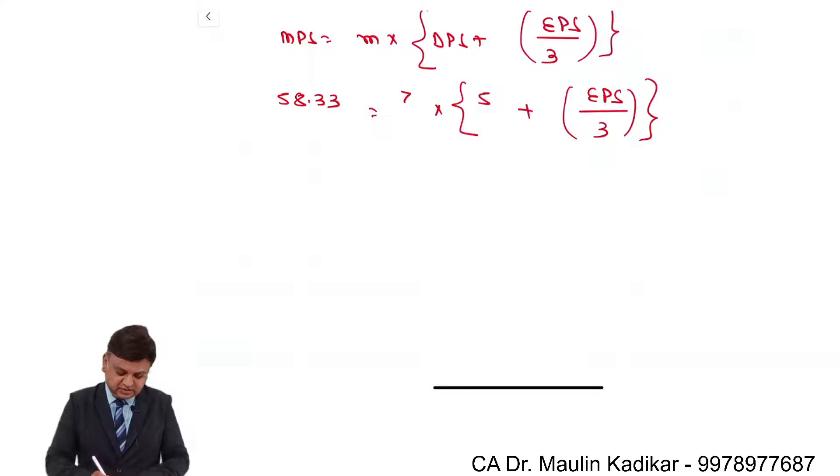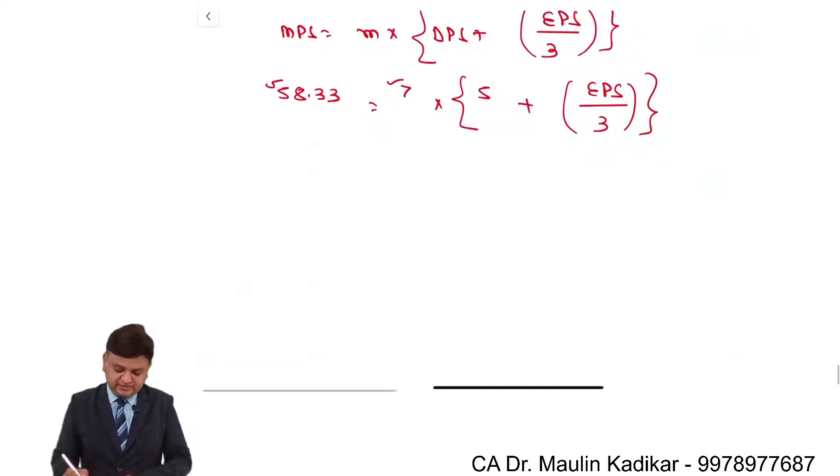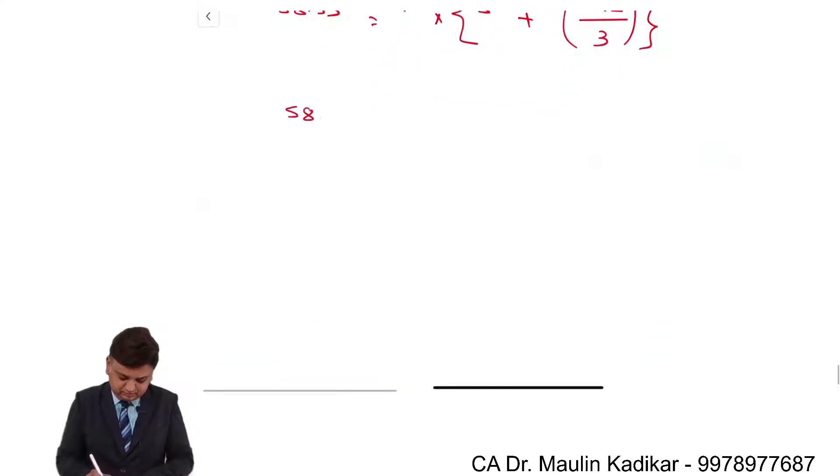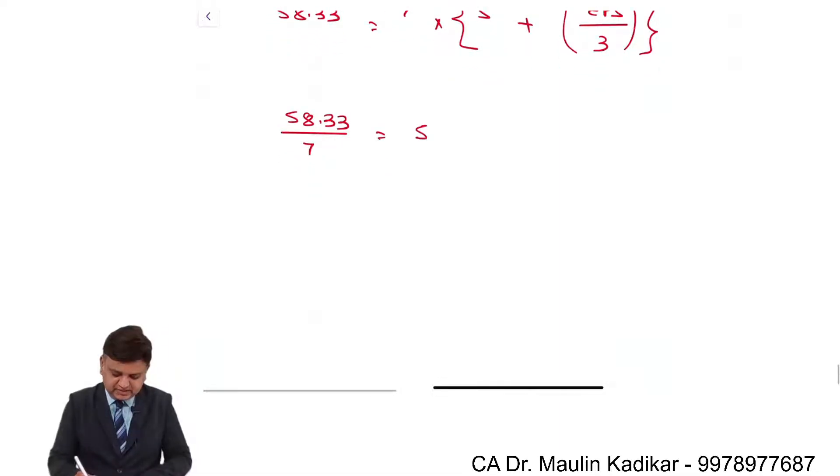So now what will happen friends, 58.33 divided by 7 is equal to 5 plus earning portion upon 3.